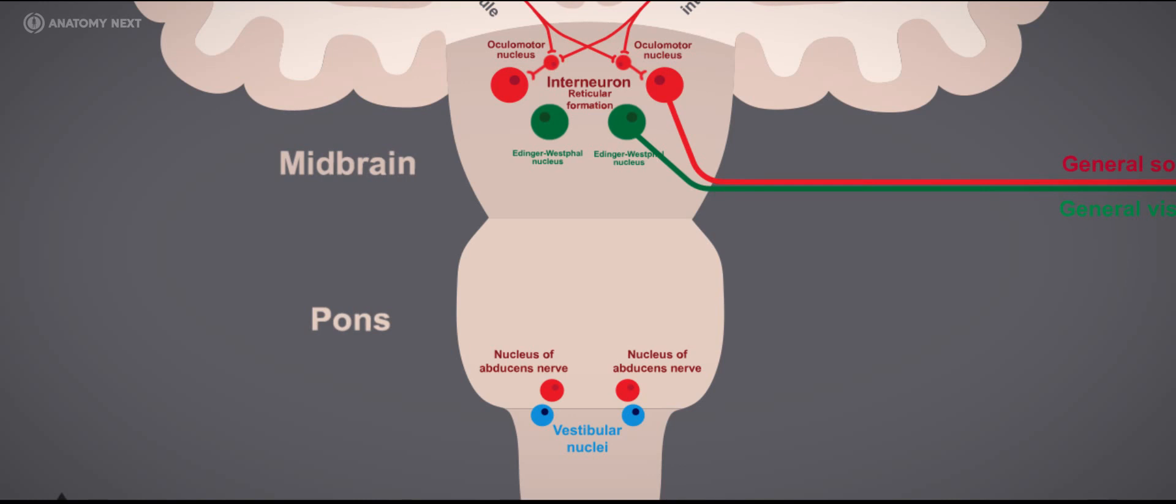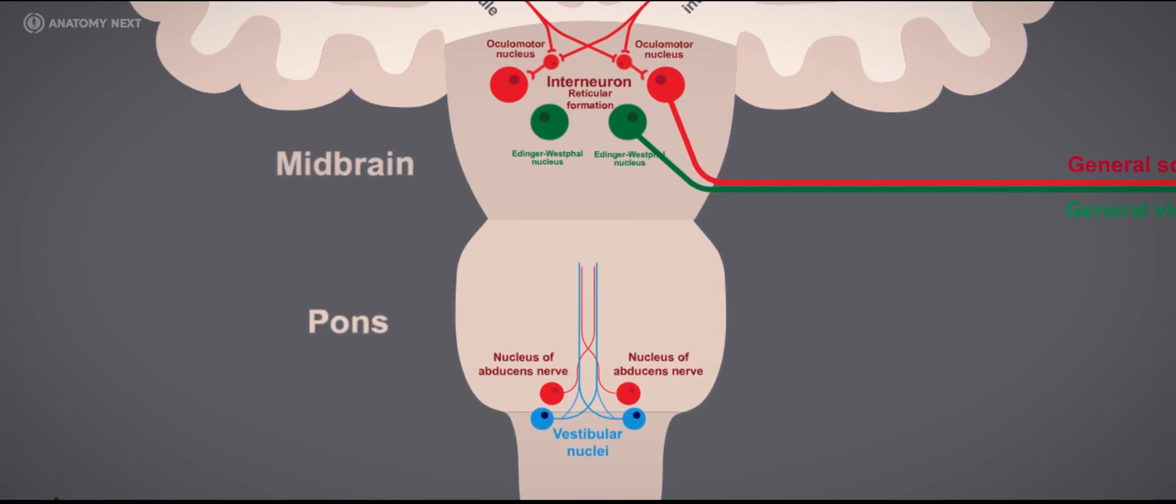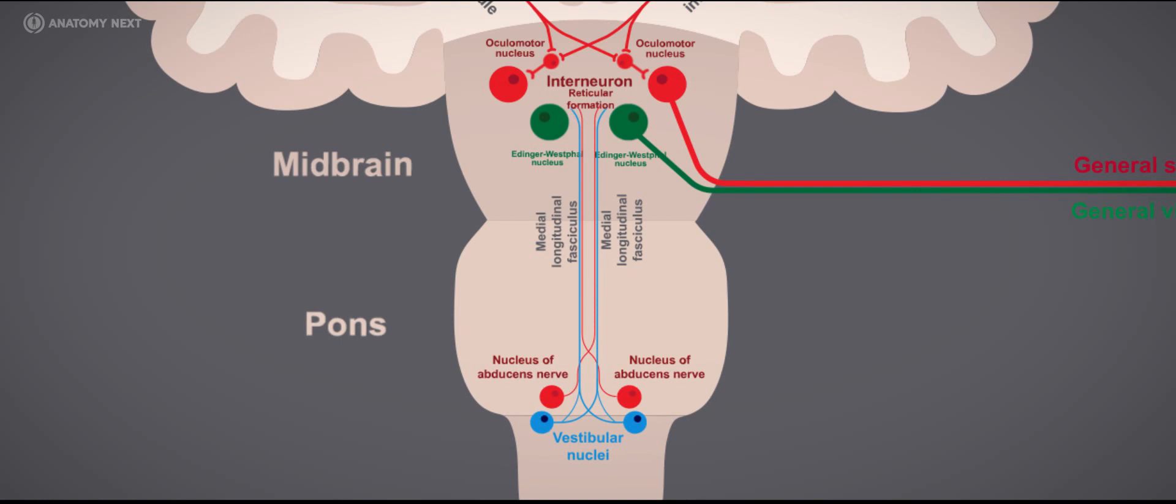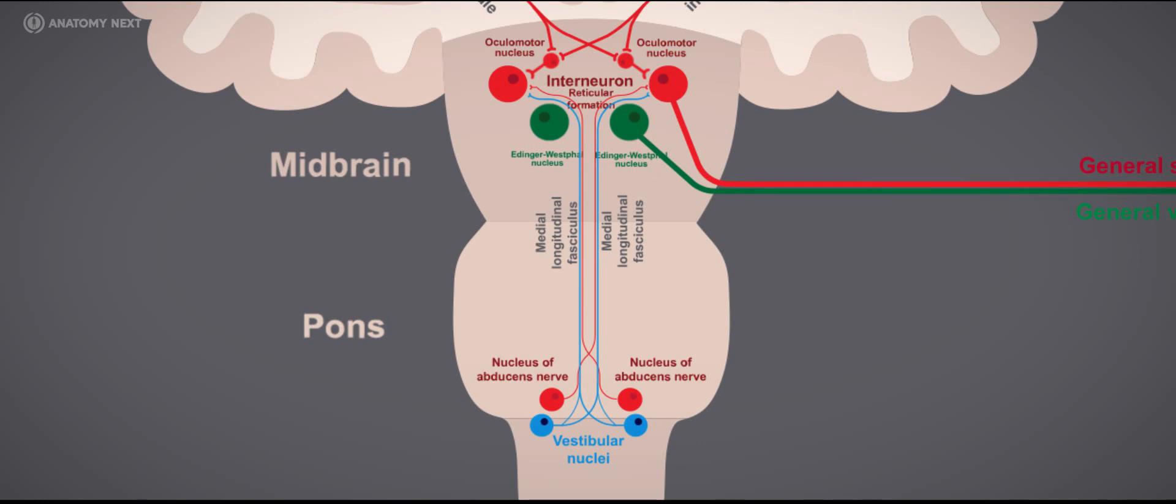To provide this, the abducens nucleus sends inhibiting impulses to the ipsilateral nucleus, thus inhibiting the medial rectus of one eye, while sending activating impulses to the contralateral oculomotor nucleus, activating the medial rectus muscle of the other eye. So, the medial rectus muscle of one eye is activated, while the medial rectus muscle of the other eye is inhibited.